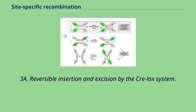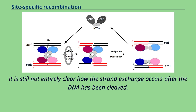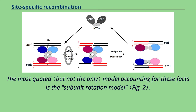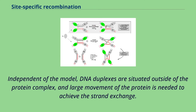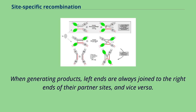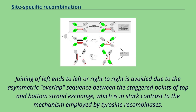Figure 3a: Reversible insertion and excision by the CRE-LOX system. Figure 3b: Inversion by the CRE-LOX system. It is still not entirely clear how the strand exchange occurs after the DNA has been cleaved. However, it has been shown that the strands are exchanged while covalently linked to the protein, with a resulting net rotation of 180 degrees. The most quoted model accounting for these facts is the subunit rotation model. Independent of the model, DNA duplexes are situated outside of the protein complex, and large movement of the protein is needed to achieve the strand exchange. In this case the recombination sites are slightly asymmetric, which allows the enzyme to tell apart the left and right ends of the site. When generating products, left ends are always joined to the right ends of their partner sites, and vice versa. This causes different recombination hybrid sites to be reconstituted in the recombination products. Joining of left ends to left or right to right is avoided due to the asymmetric overlap sequence between the staggered points of top and bottom strand exchange, which is in stark contrast to the mechanism employed by tyrosine recombinases.